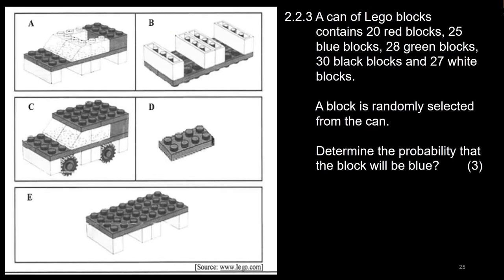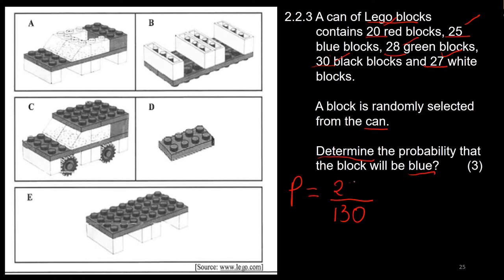They then ask which letter fits the instruction 'Flip over the part assembly.' Flipping over or turning upside down corresponds to diagram B, so we write B. The next question: a can of Lego blocks contains 20 red, 25 blue, 28 green, 30 black, and 27 white blocks. A block is randomly selected. Determine the probability it will be blue. Total blocks: 20 + 25 + 28 + 30 + 27 = 130. Blue blocks = 25. Probability = 25/130. Simplify it, or write as a decimal or percentage — all are correct.